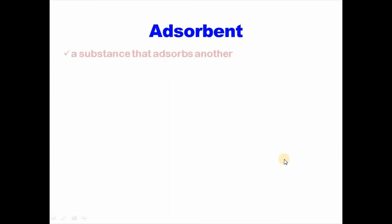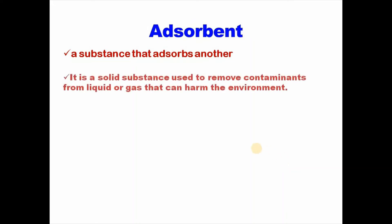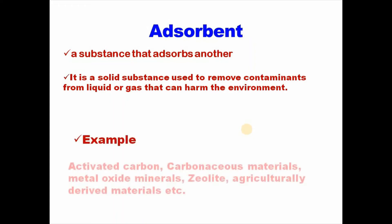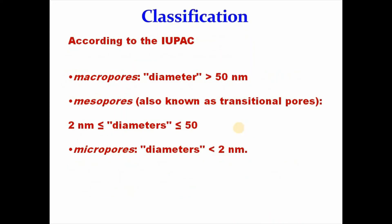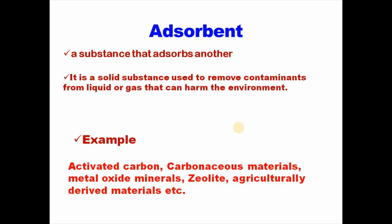Then adsorbent. Adsorbent is a substance that adsorbs another. It is a solid substance used to remove contaminants from liquid or gas that can harm the environment. And typical examples are activated carbon, carbonaceous materials, metal oxides, zeolites, agriculturally derived materials, etc.